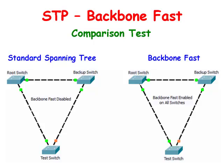Backbone Fast can reduce the indirect failover time from the normal 50 seconds to about 30 seconds. When the switch loses its link back to the root switch, it needs to find an alternate path back to the root switch.